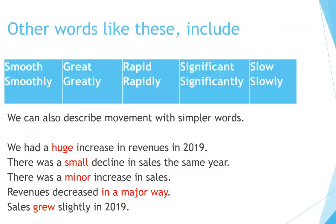Other words like these include similar degree descriptors. We can also describe movement with simpler words. For example: 'We had a huge increase in revenues in 2019.' 'There was a small decline in sales the same year.' 'There was a minor increase in sales.' 'Revenues decreased in a major way.' 'Sales grew slightly in 2019.'